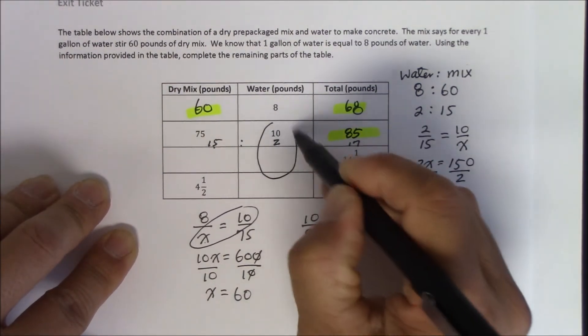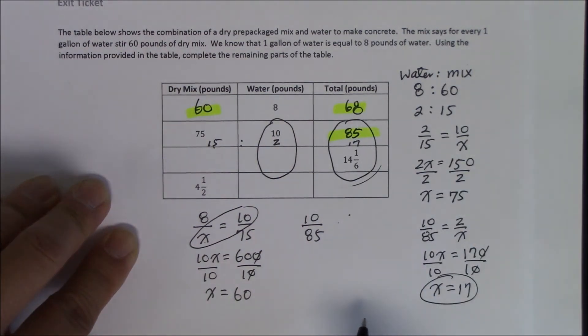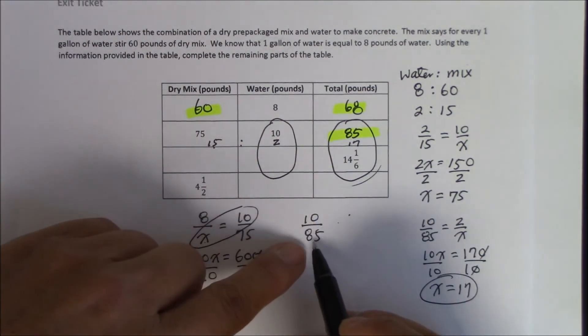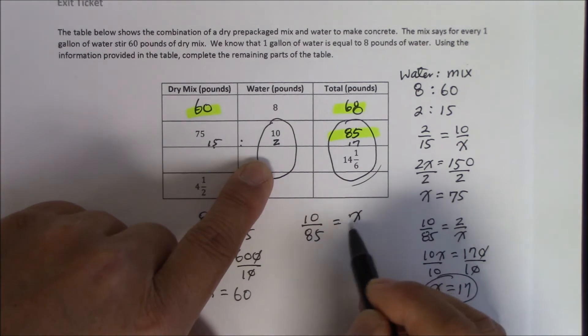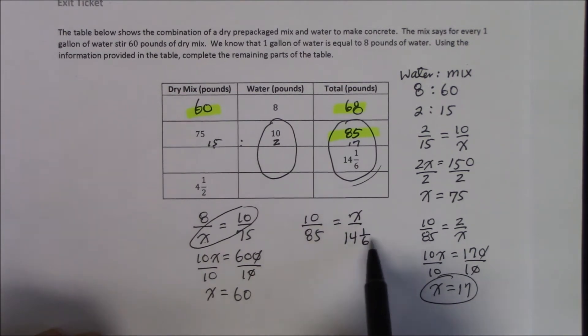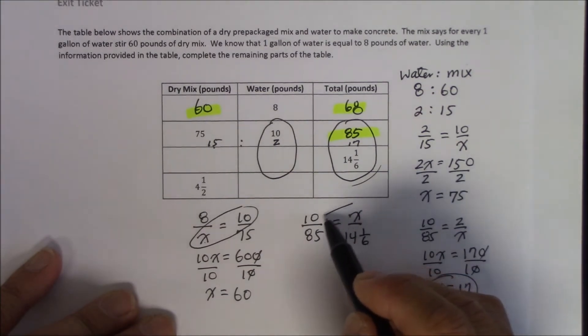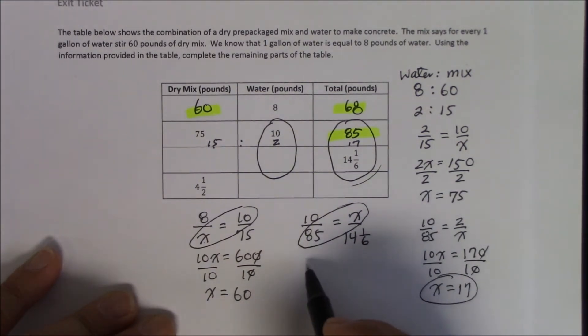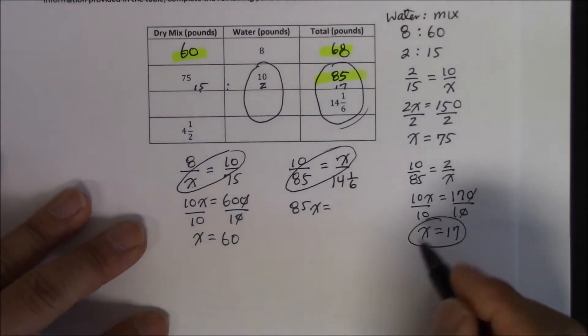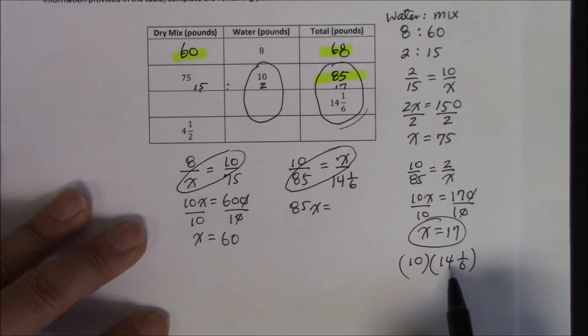So let's go ahead and figure out this ratio now. So 10 is to 85, and x is 2, 14 and 1 sixth. What's up with the fraction in the denominator? Don't worry, let's just go ahead and do the cross multiplication, starting with the x. So 85 times x is 85x, and 10 times 14 and 1 sixth. Let's make that into an improper fraction. 14 times 6 is 84.